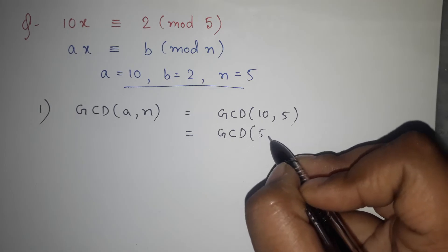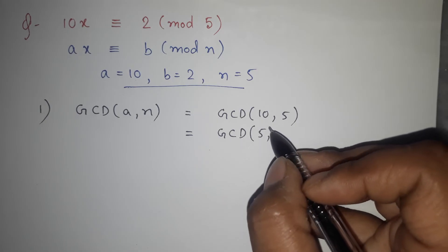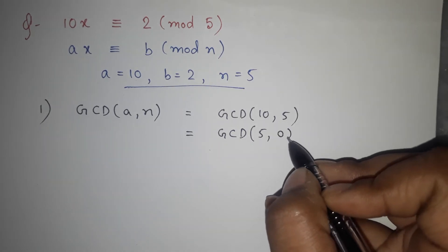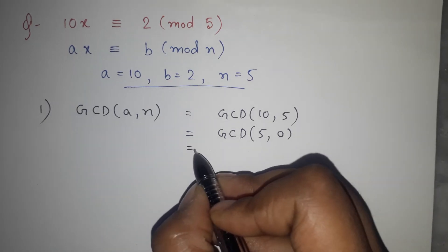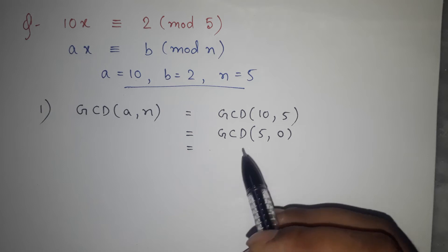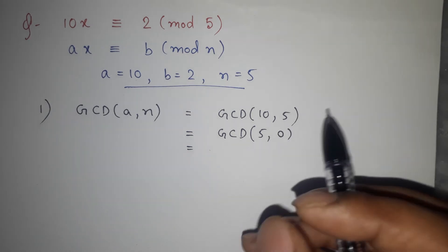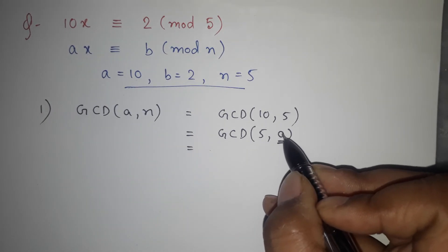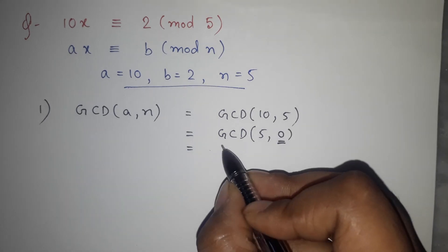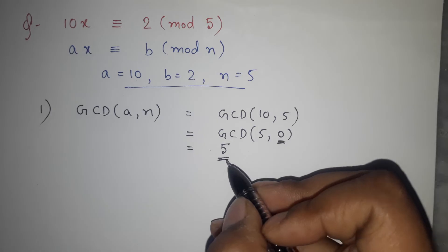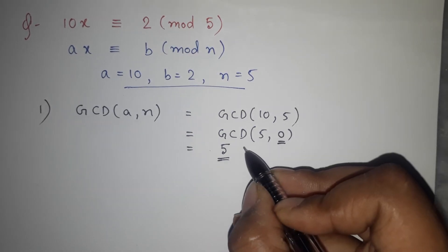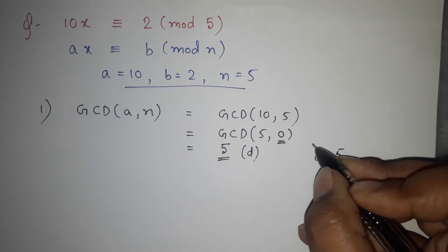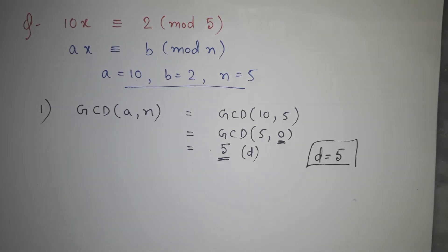Using the Euclidean method: GCD(10, 5) = GCD(5, remainder of 10 ÷ 5). Since 5 × 2 = 10, the remainder is 0, so we get GCD(5, 0). Whenever the second portion is 0, that first number is our GCD answer. So GCD(10, 5) = 5, and we name this d. Therefore, d = 5.